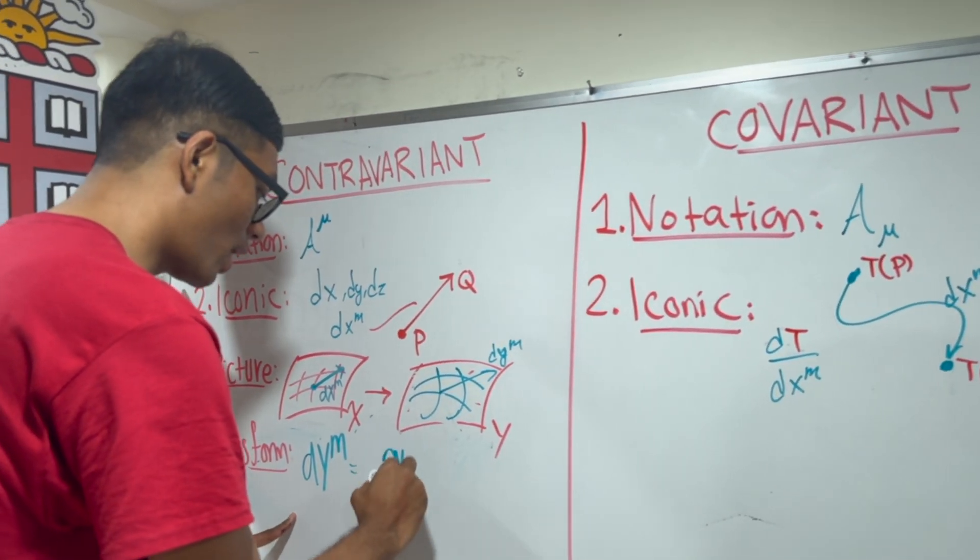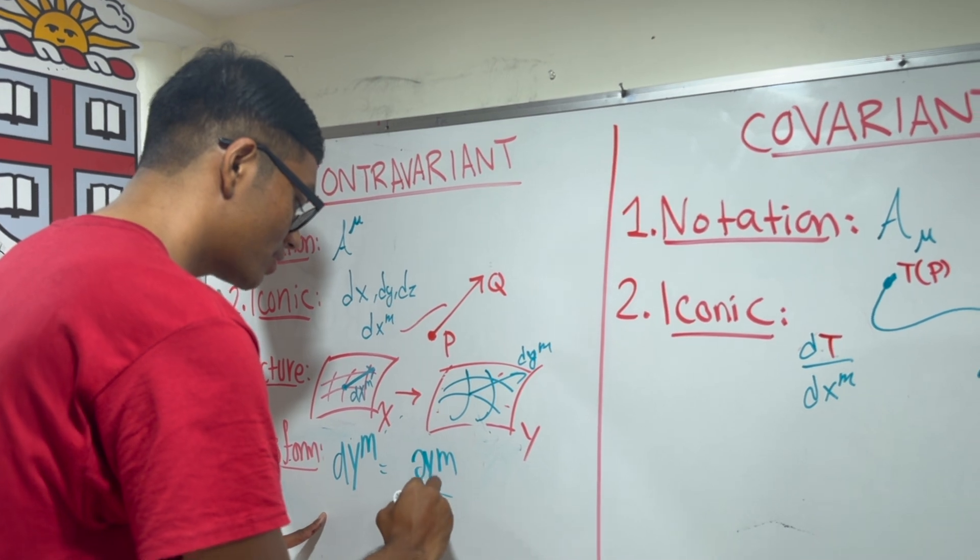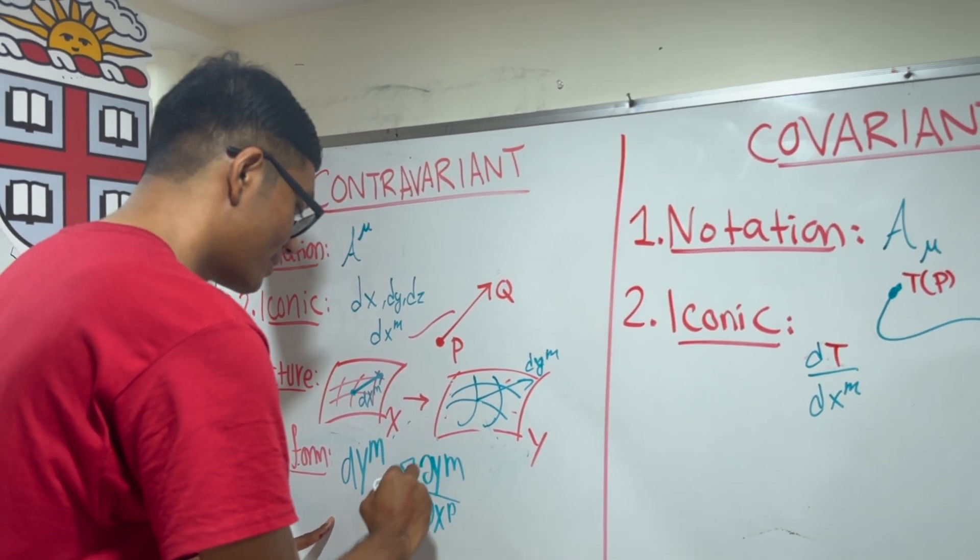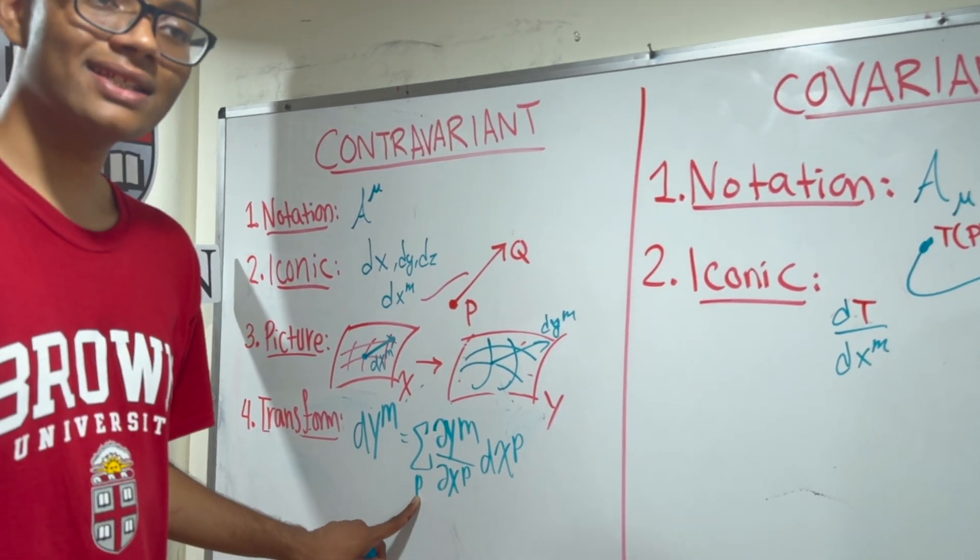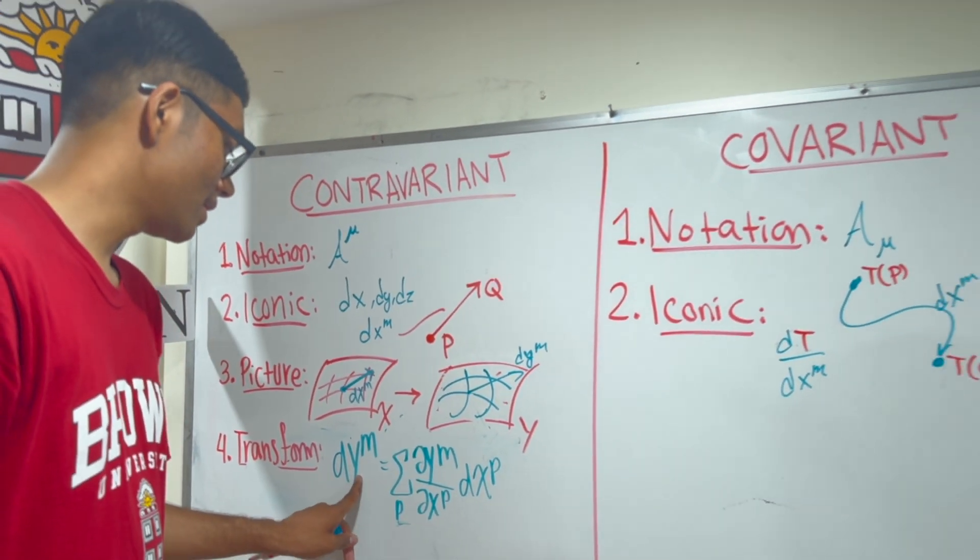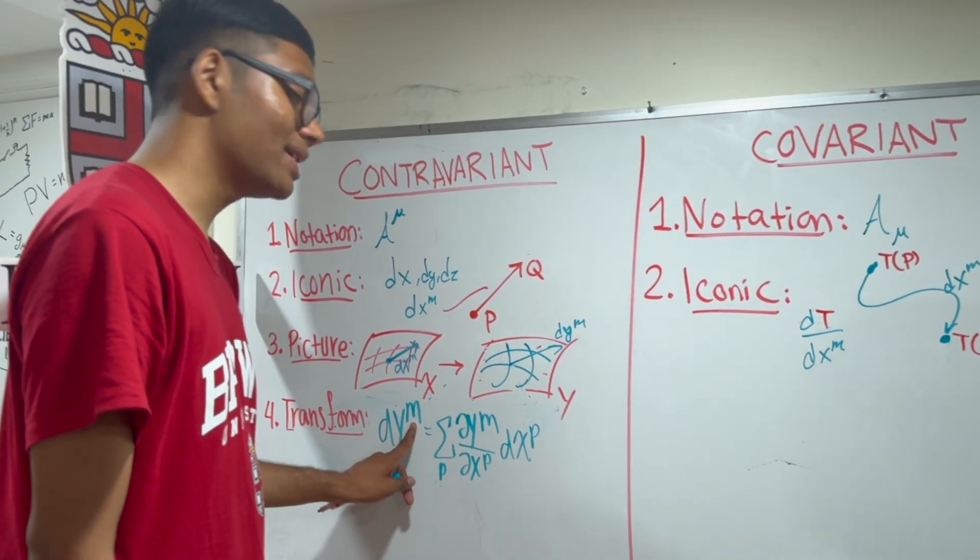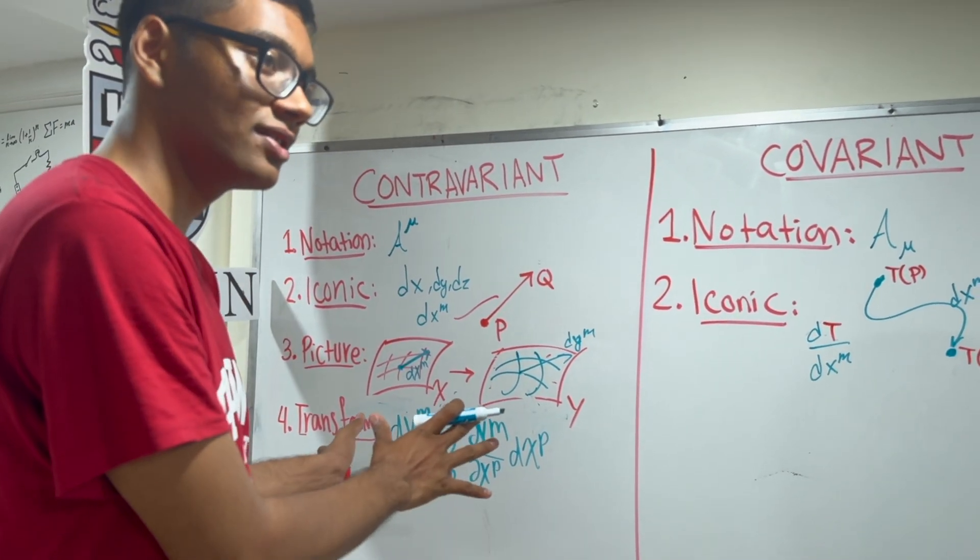You can see that this dummy variable p gets eliminated and just the m index remains. Is this okay so far? Okay. Now, let's talk about the picture for covariant vectors.